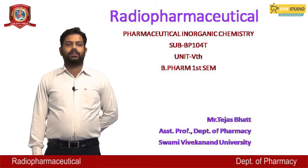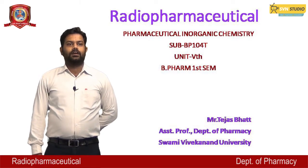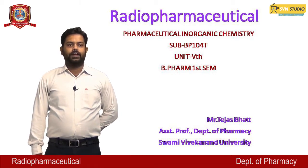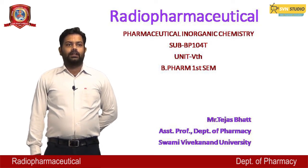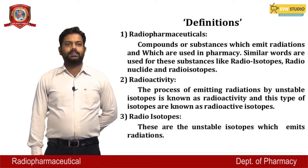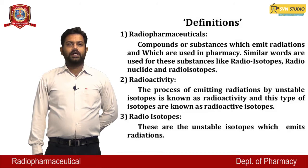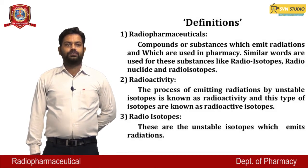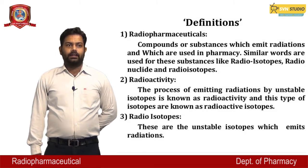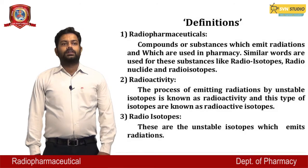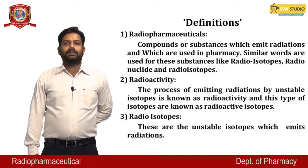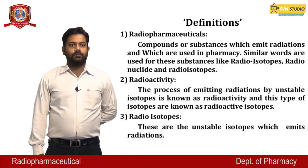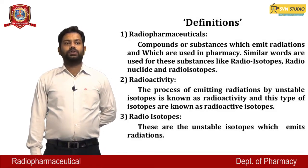Today's topic is radiopharmaceuticals, which is in the pharmaceutical inorganic chemistry subject, code BP104T, Unit 5, B. Pharm first semester. Radiopharmaceuticals are defined as compounds or substances which emit radiation and which are used in pharmacy. Similar terms used for these substances are radioisotope and radionuclide. A compound which emits radiation is known as a radiopharmaceutical.